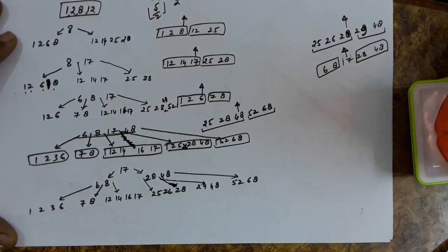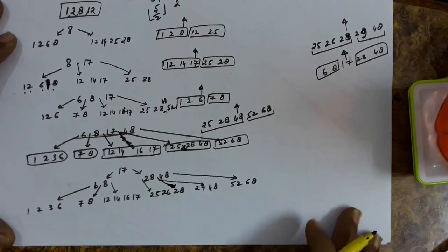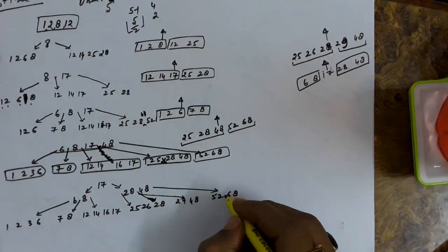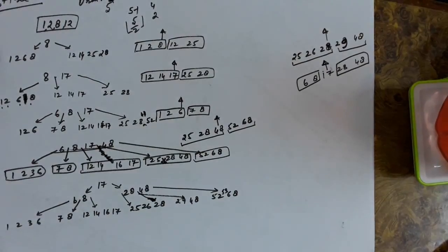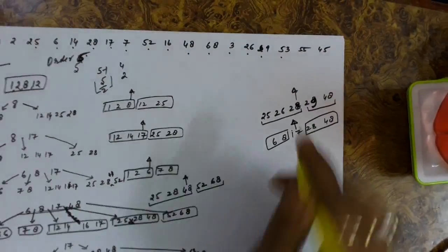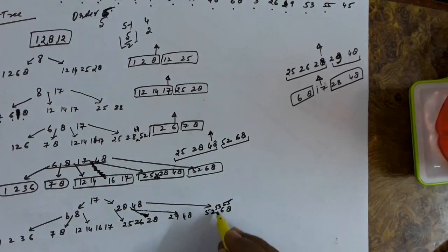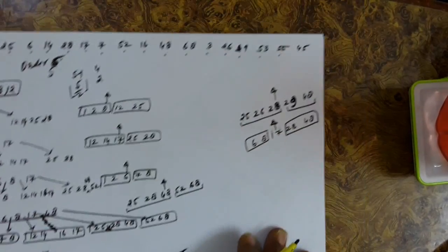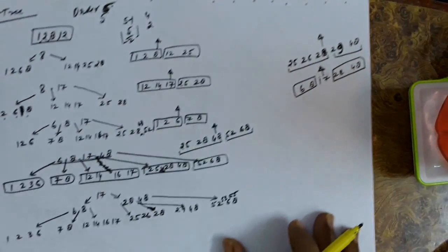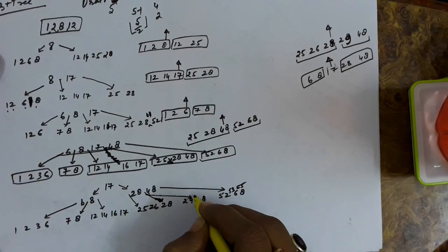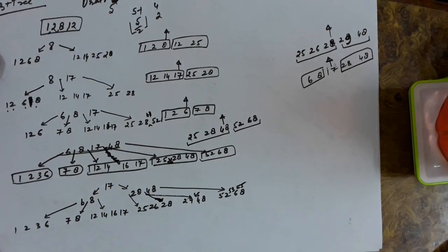Next key for insertion is 53, which can easily come into the node with 52 and 68. Next key for insertion is 55, which also comes there easily. So 52, 53, 55, and 68 are in the same node without violating the condition. Next key for insertion is 45: it is less than 48, greater than 28, so 45 will come into the node containing 29 and 48.